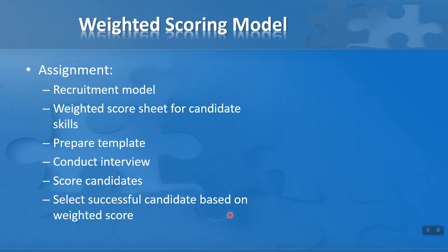Following this lesson, I'm going to set you an assignment on a recruitment model. I want you to create a weighted scoring template. Pick a job, such as technical support, and determine what candidate skills you'd require. If you're interviewing five people, how do you weight each skill for each person? Prepare a template in a word processing document or spreadsheet. Conduct your interview and score the candidates on each criterion. You can do a mock interview with your team—it doesn't have to be real job selection. Then select the successful candidate based on the weighted score. This is designed to get you thinking about how to use weighted scoring in making a decision.